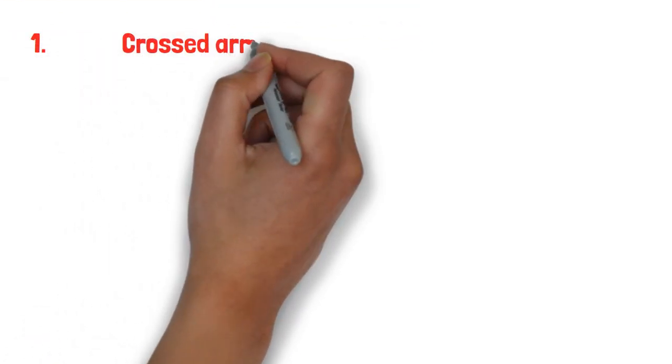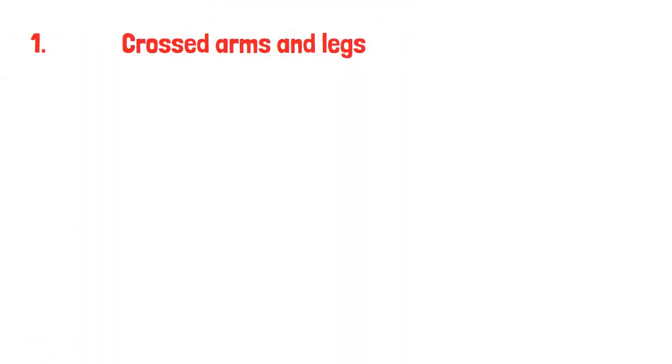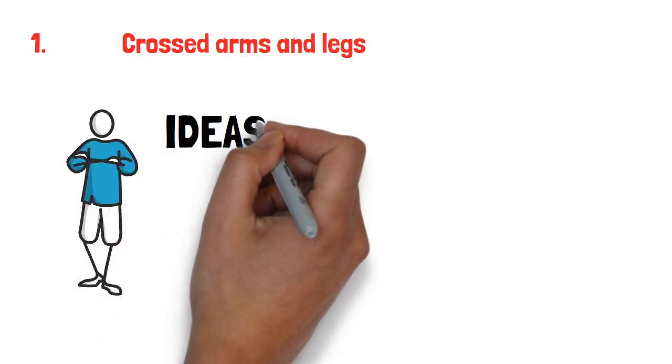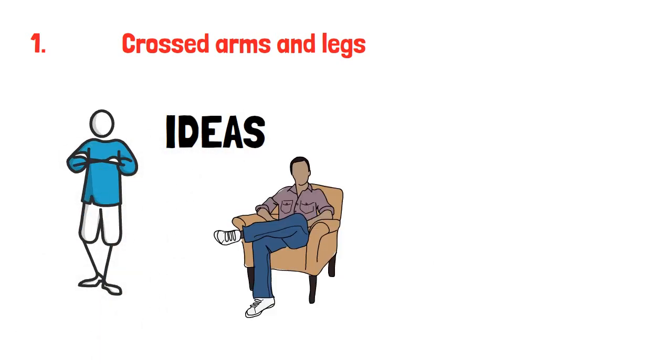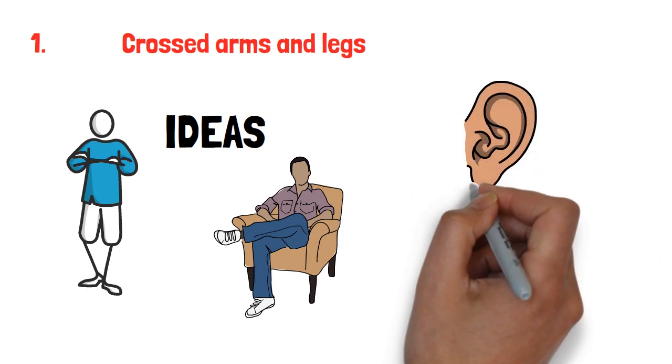1. Crossed arms and legs. Crossed arms and legs could signal resistance to your ideas. These parts of the body in such positions are physical barriers that suggest the other person is not really into what you're saying.